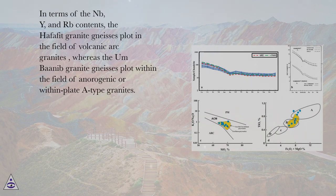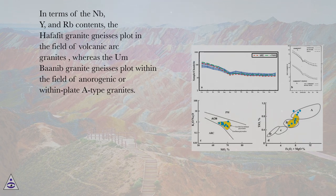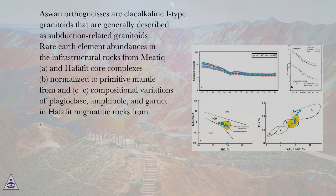In terms of Nb, Y, and Nb contents, the Hafafit granite gneisses plot in the field of volcanic arc granites, whereas the Umbanib granite gneisses plot within the field of anorogenic or within-plate A-type granites.